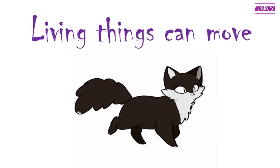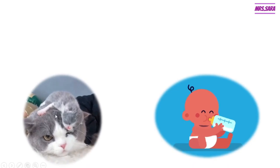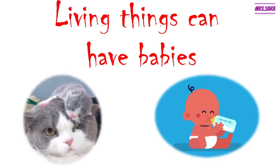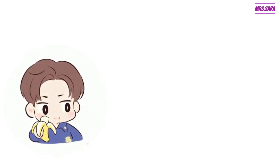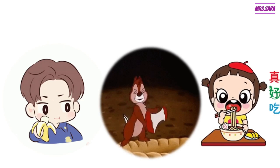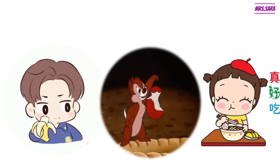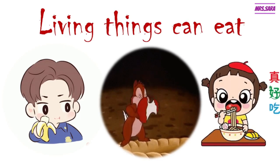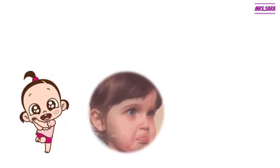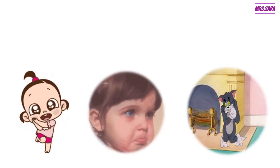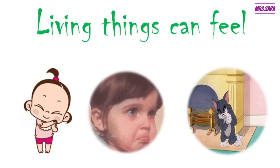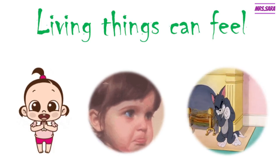Living things can have babies. What else, Primer One? The boy is eating a banana, the squirrel is eating an apple, and this girl is eating noodles — living things can eat! This girl is so happy, this girl is so sad, and Tom is feeling pain. So living things can feel — they can feel happiness, sadness, and pain.